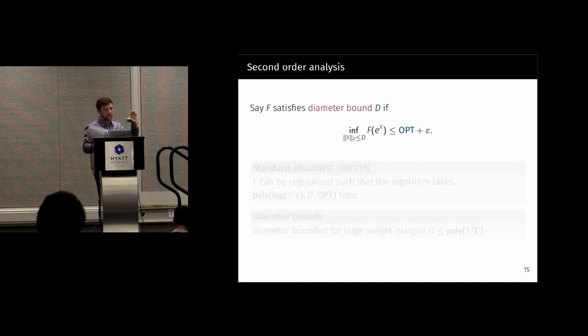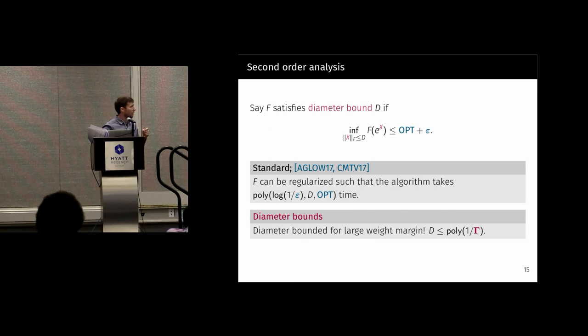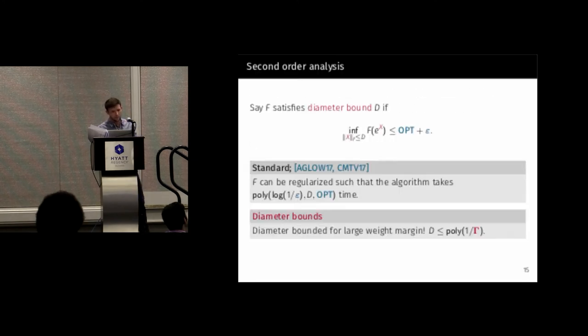The analysis, I think, is standard. What you need is something called a diameter bound, which is just that you don't have to look very far to get close to the optimum. And if this is the case, that you have a diameter bound, then you can regularize this function, which means add something to make it steeper, so that this algorithm takes poly log 1 over epsilon d an opt time. And one of our technical contributions is to find such a diameter bound, which depends only on this combinatorial information, this weight margin. But I can't prove it to you now.